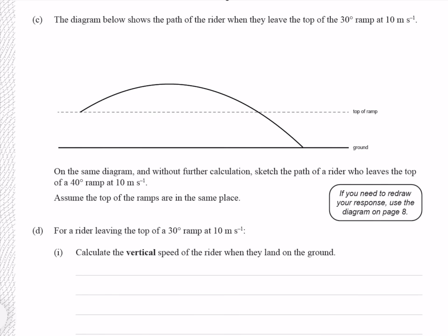The diagram below shows the path of the rider when they leave the top of the 30 degree ramp at 10 meters per second. On the same diagram and without further calculation, sketch the path of a rider who leaves the top of a 40 degree ramp at 10 meters per second. The key thing to know here is that the optimum launch angle, when not considering air resistance, is 45 degrees. So the closer you are to 45 degrees, the further your object will go. Because we are launching at a steeper angle, it's also going to go higher. So let's draw that.